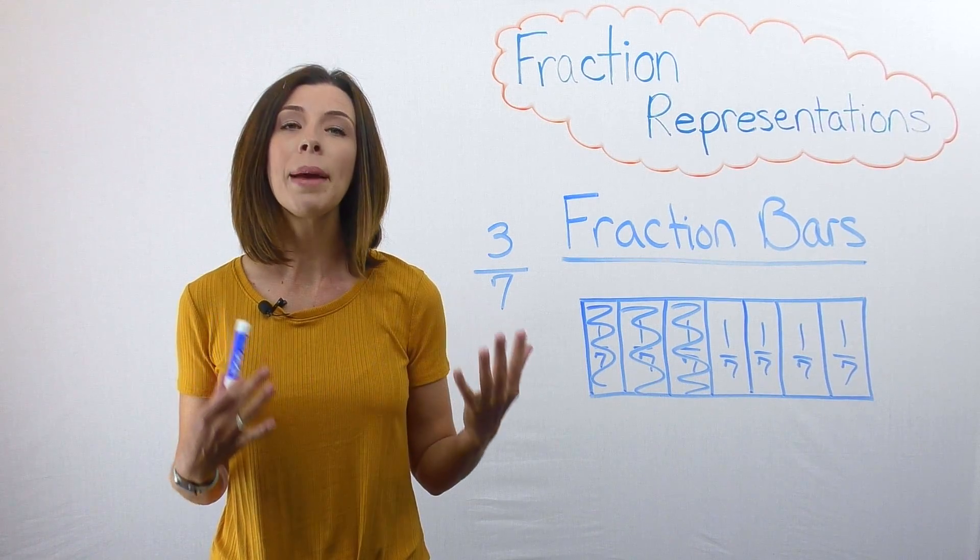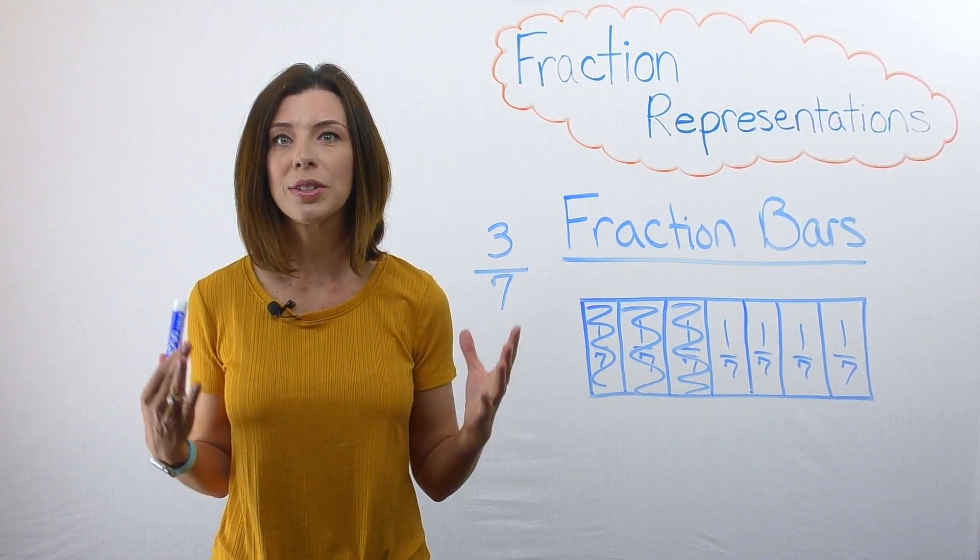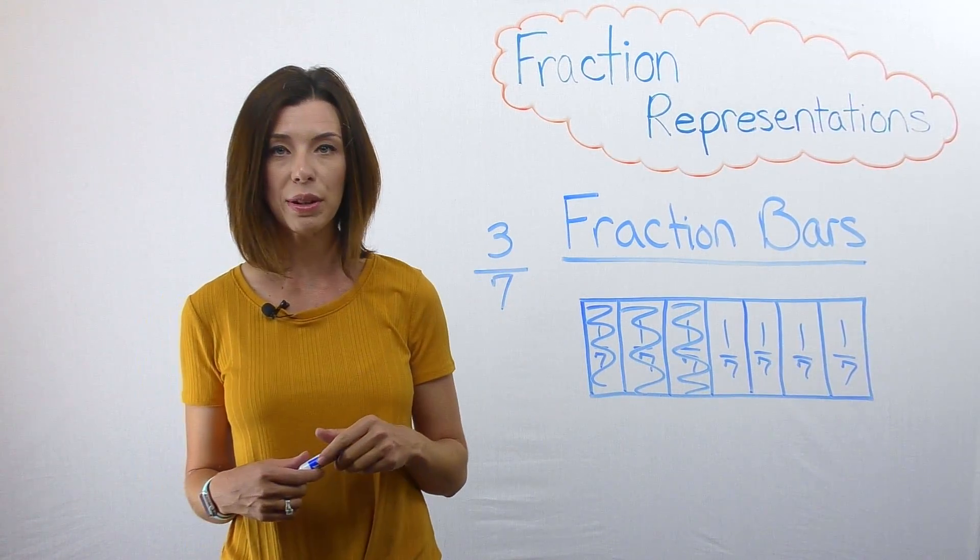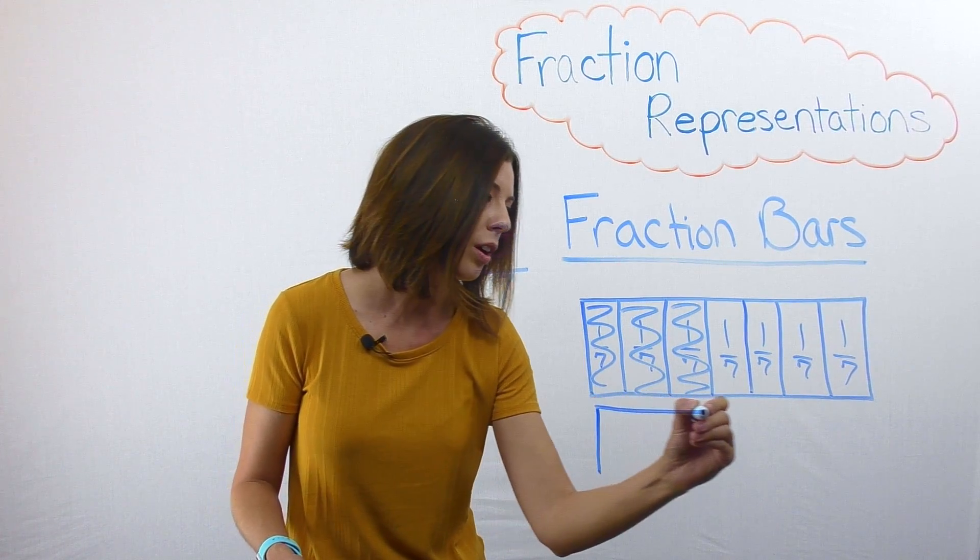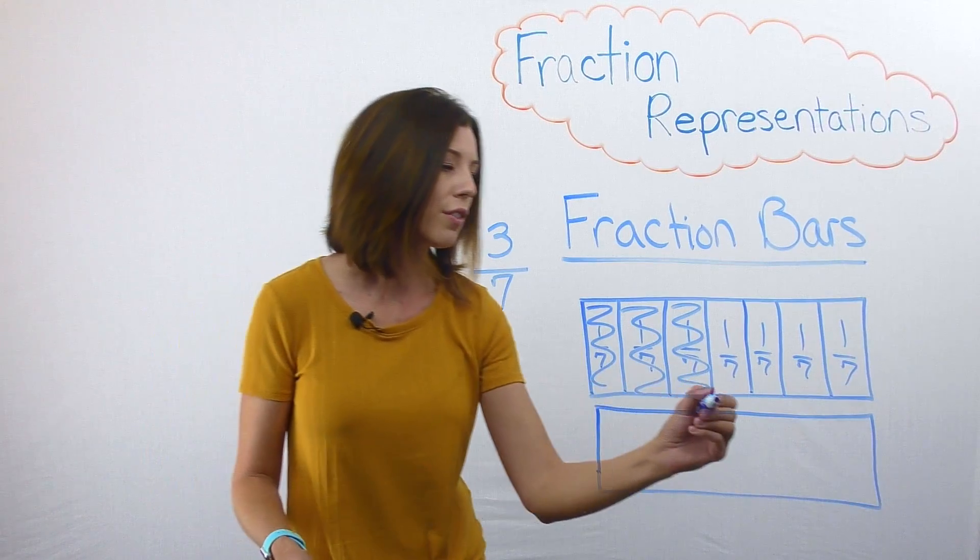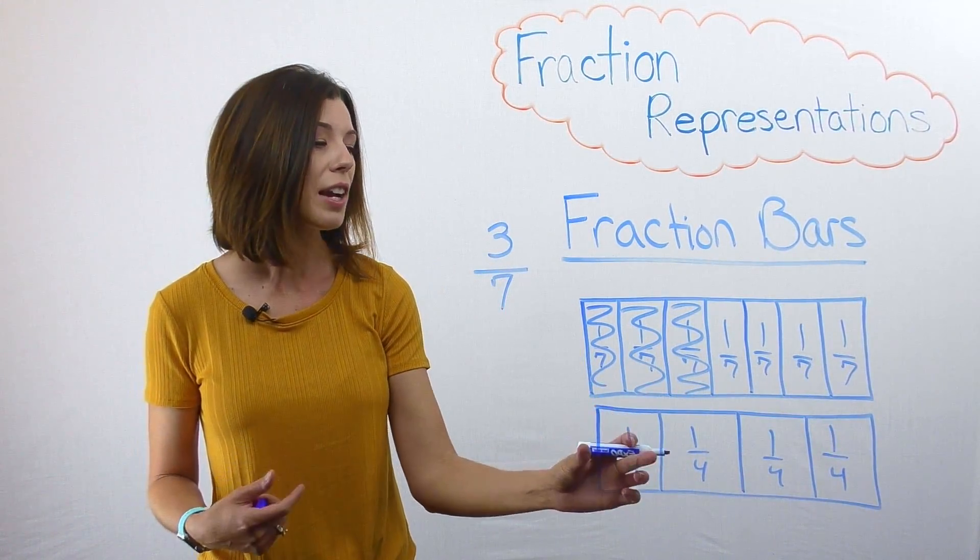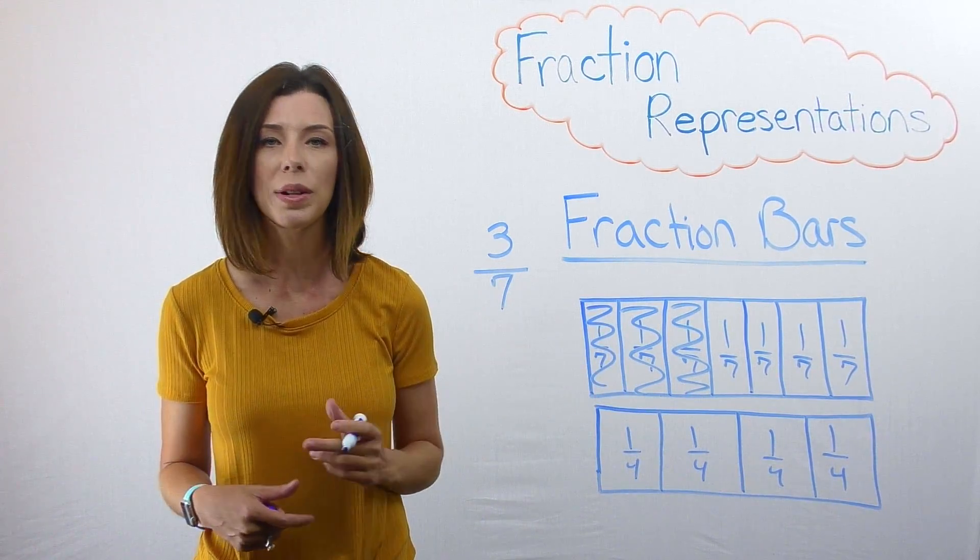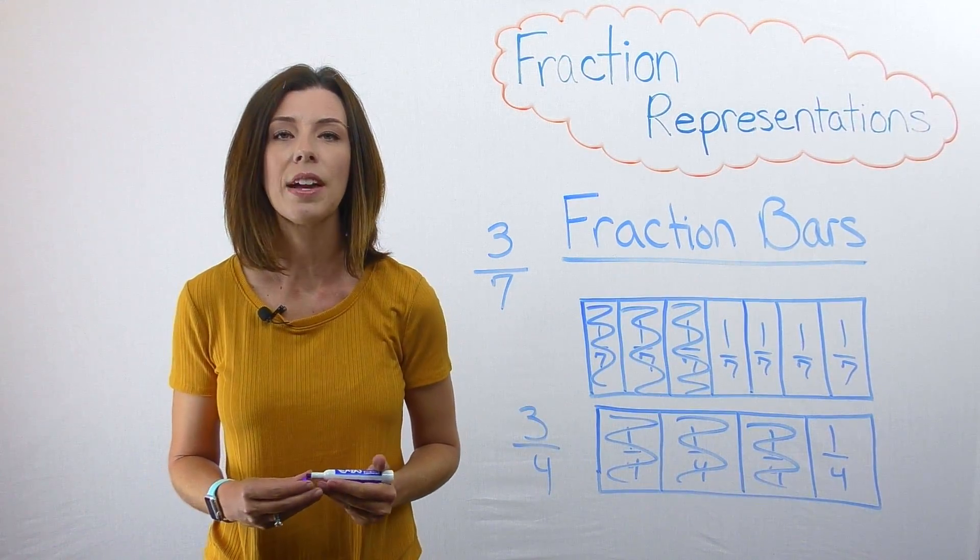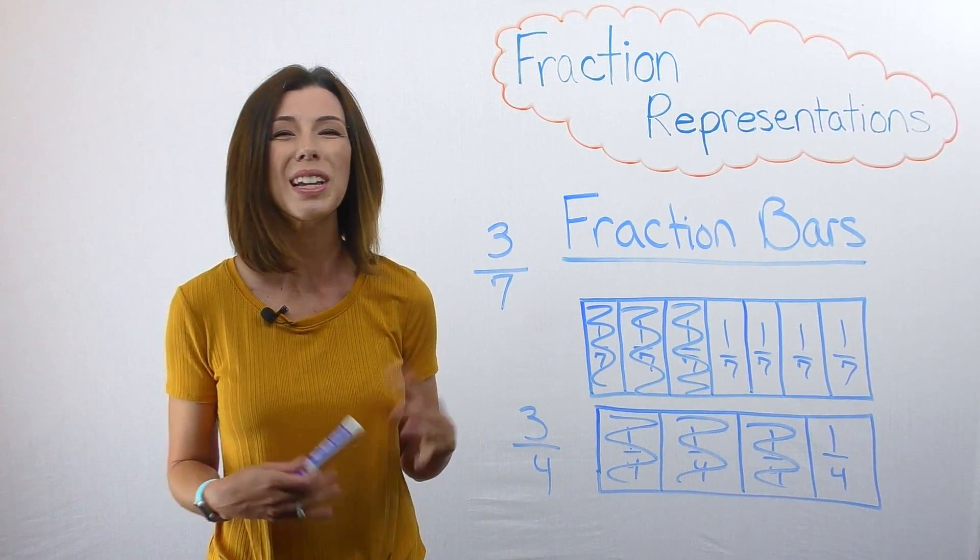One last thing. If you're comparing fractions, it's super important that you make sure that your units are both the same size. So if I was trying to compare, say, 3/7 and 3/4, I would want to make sure that my units were the same length. Notice that when I break this into fourths, I can see that my pieces of 1/4 are definitely larger than my pieces of 1/7. When I shade in 3/4, I can easily see that it's more than 3/7. So that's just a little side note when you're comparing two fractions using any representation.